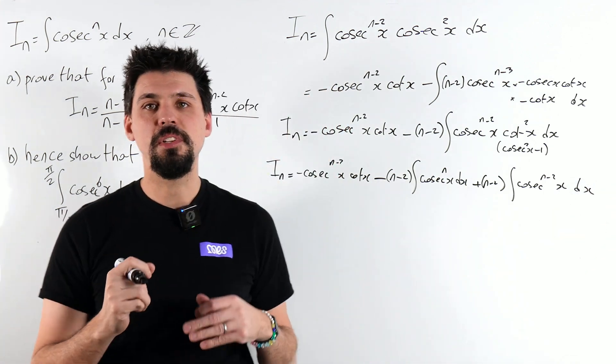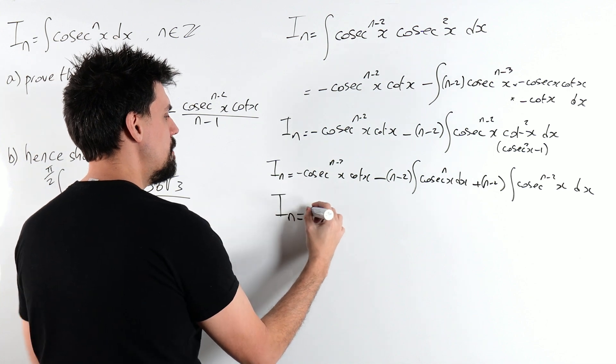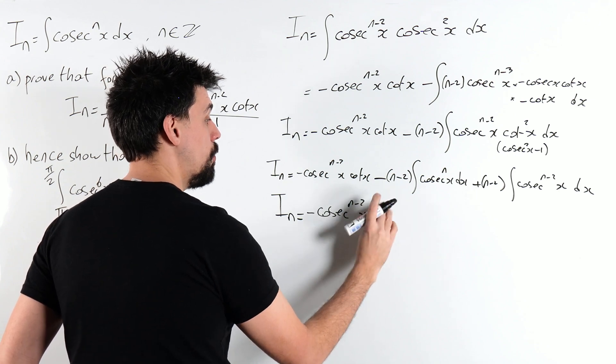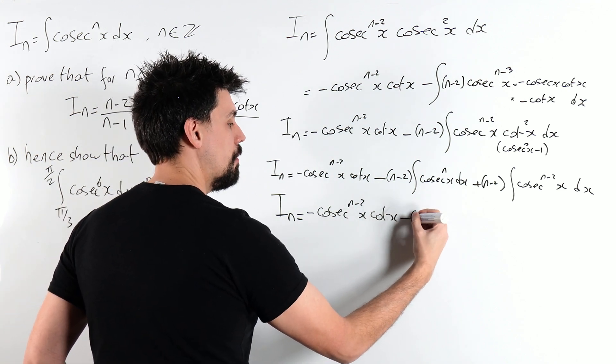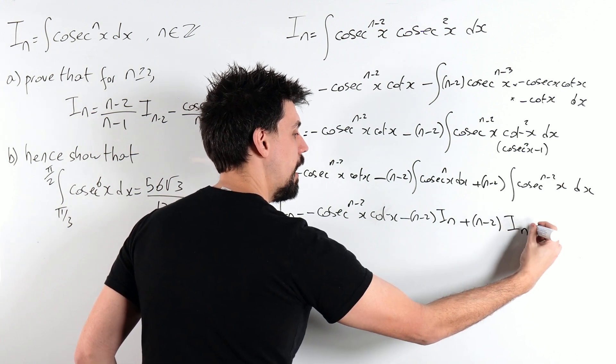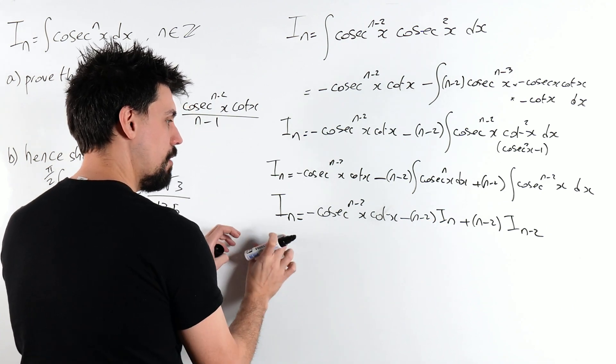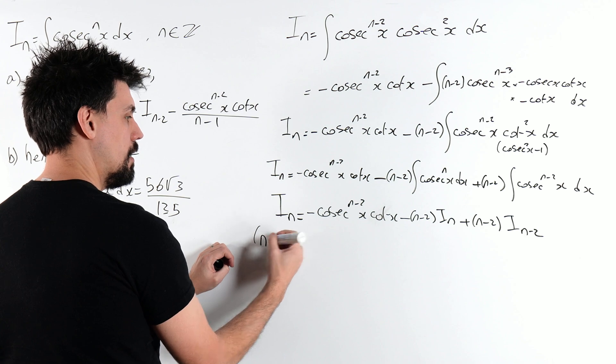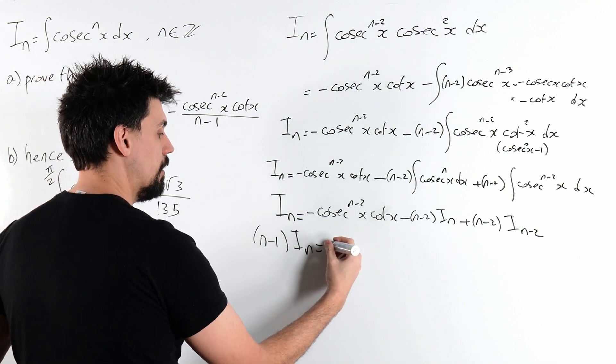Apologies if that's looking a little bit small for us. But now we can make everything look a little bit better. So we've got our term here, which we want. We've wanted it from the very beginning. We can see that in the expression. Minus n-2 i_n plus n-2 i_n-2. And we should get proper excited. We'll move this term over to the right-hand side. So I'll end up with n minus 1 i_n.